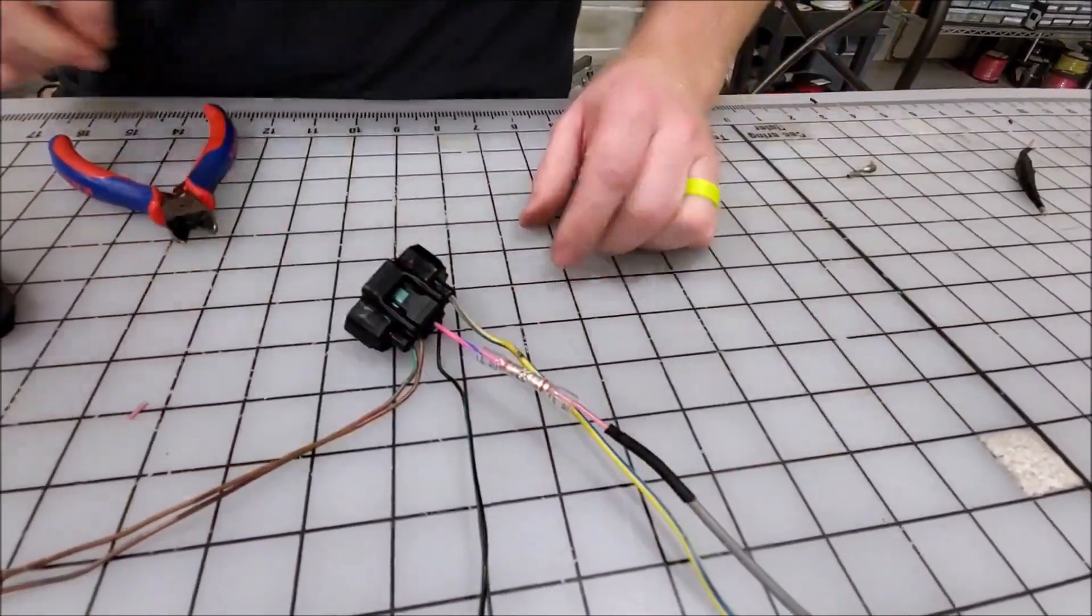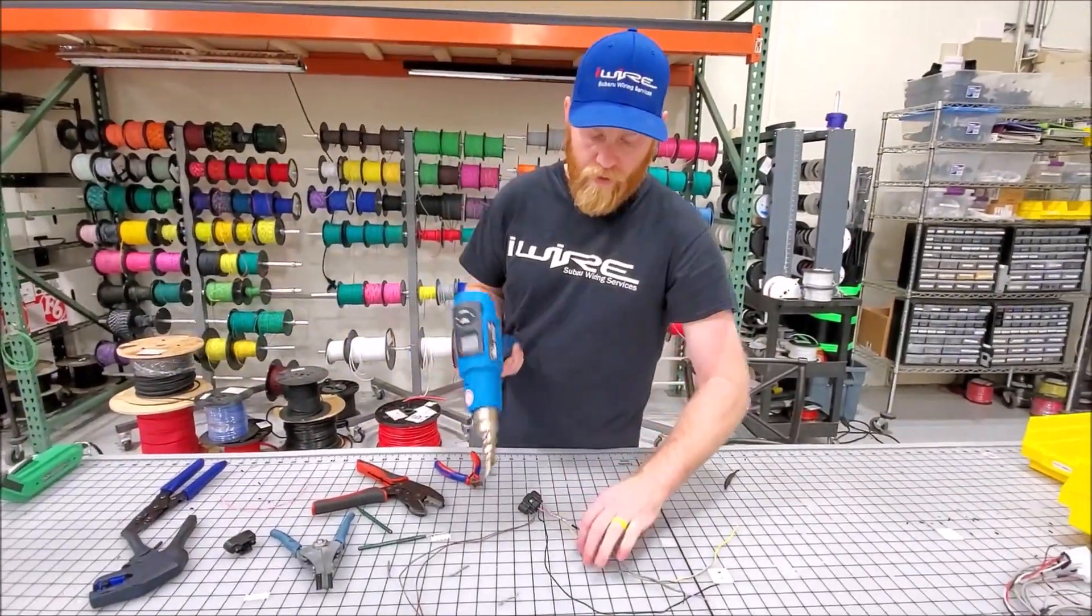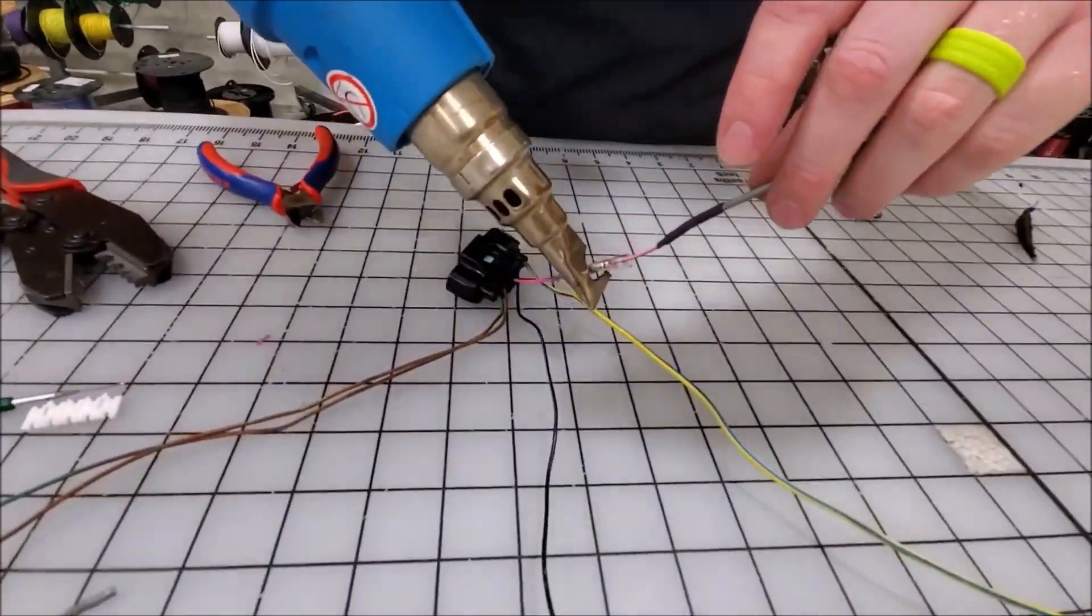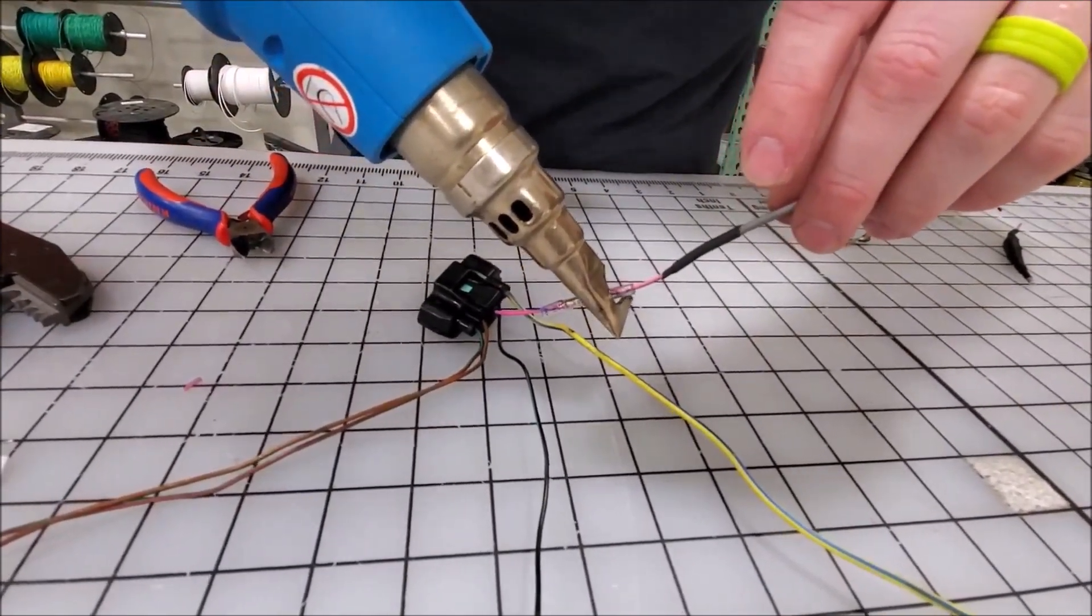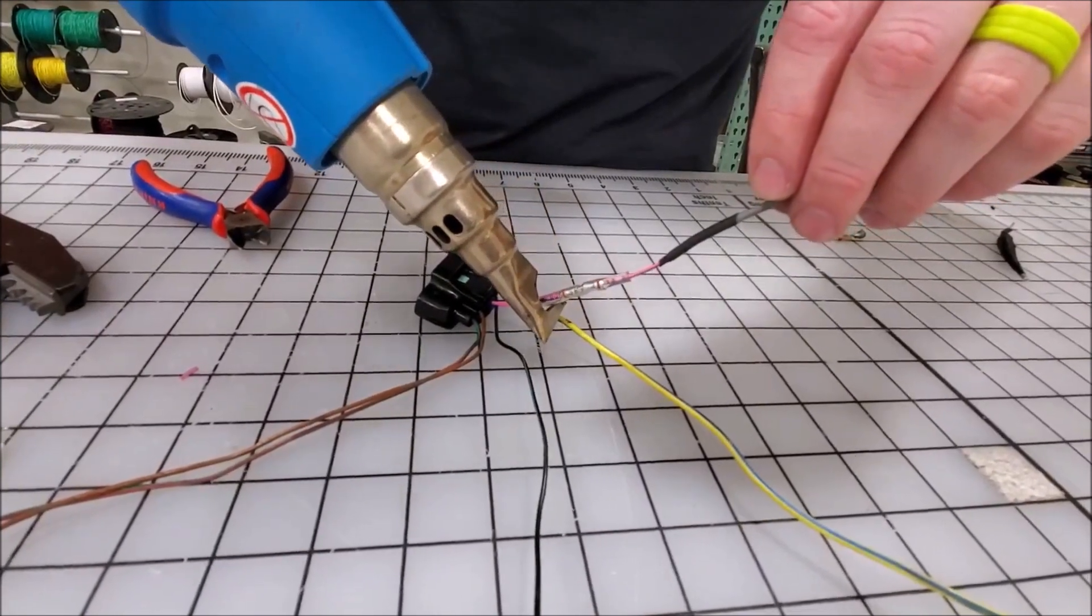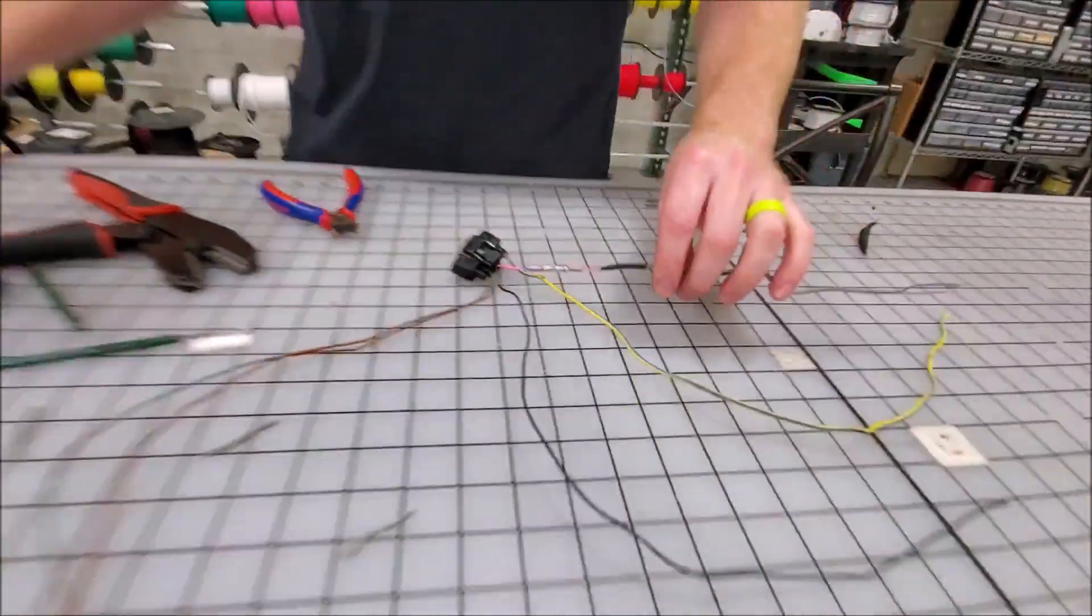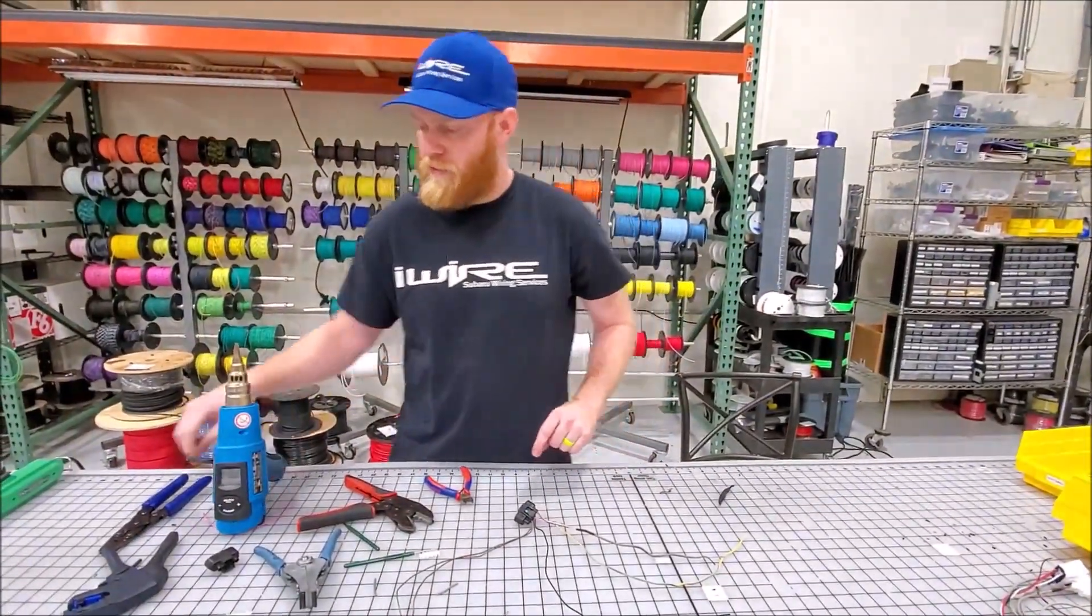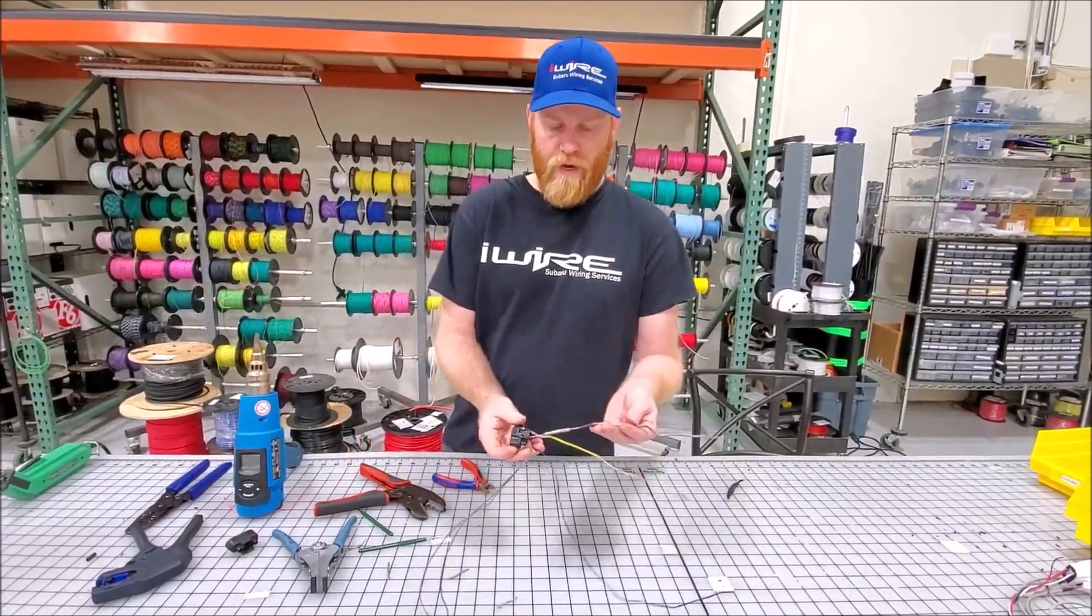And these are the only butt connectors I would recommend that you use because they are heat and glue, so they'll be sealed from the outside. Anything less than that will fail in your engine bay. And now you can have your MAF working.